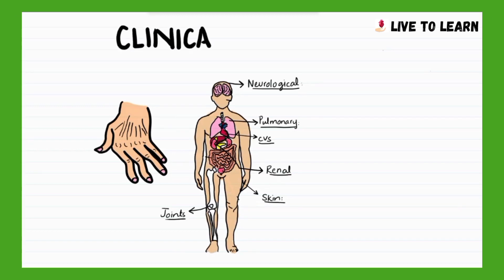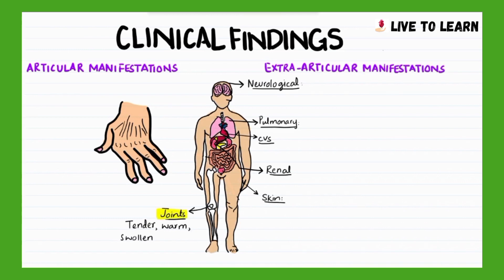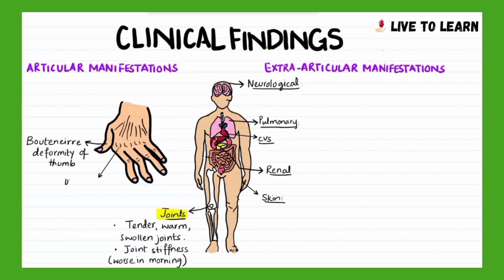To discuss the clinical findings of rheumatoid arthritis, let's categorize them into articular manifestations and extra-articular manifestations. Articular manifestations involve tender, warm, swollen, and stiff joints, especially the metacarpophalangeal and proximal interphalangeal joints. Joint deformities such as boutonniere deformity of the thumb, ulnar deviation of metacarpophalangeal joints, and swan neck deformities of fingers are commonly seen.